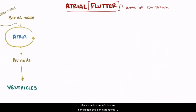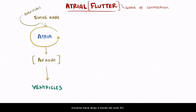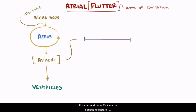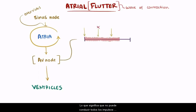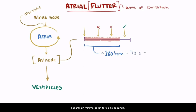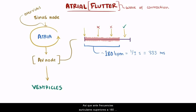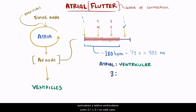In order for the ventricles to contract, that signal needs to move down through the AV node. Luckily, the AV node has a relatively long refractory period, meaning it can't conduct every single impulse sent from the atria. It typically maxes out around 180 beats per minute, meaning it has to wait a minimum of about one-third of a second — or 333 milliseconds — until it can relay another signal. So if the atrial rate is higher than 180 beats per minute, you'll end up with only a ratio of atrial beats to ventricular beats, like 2:1 or 3:1.